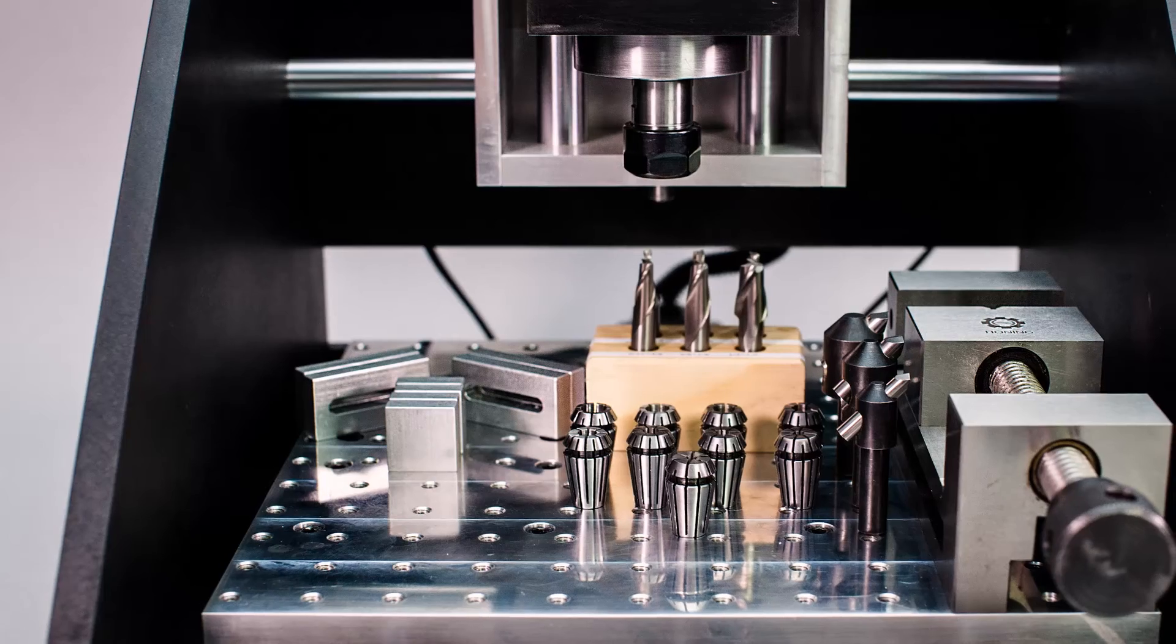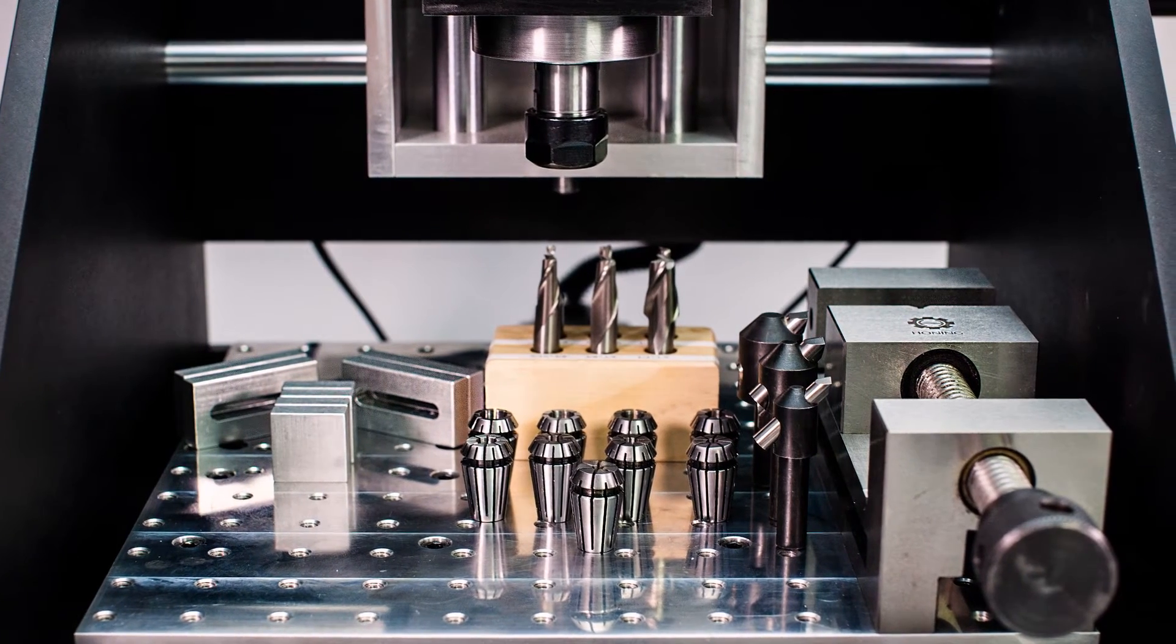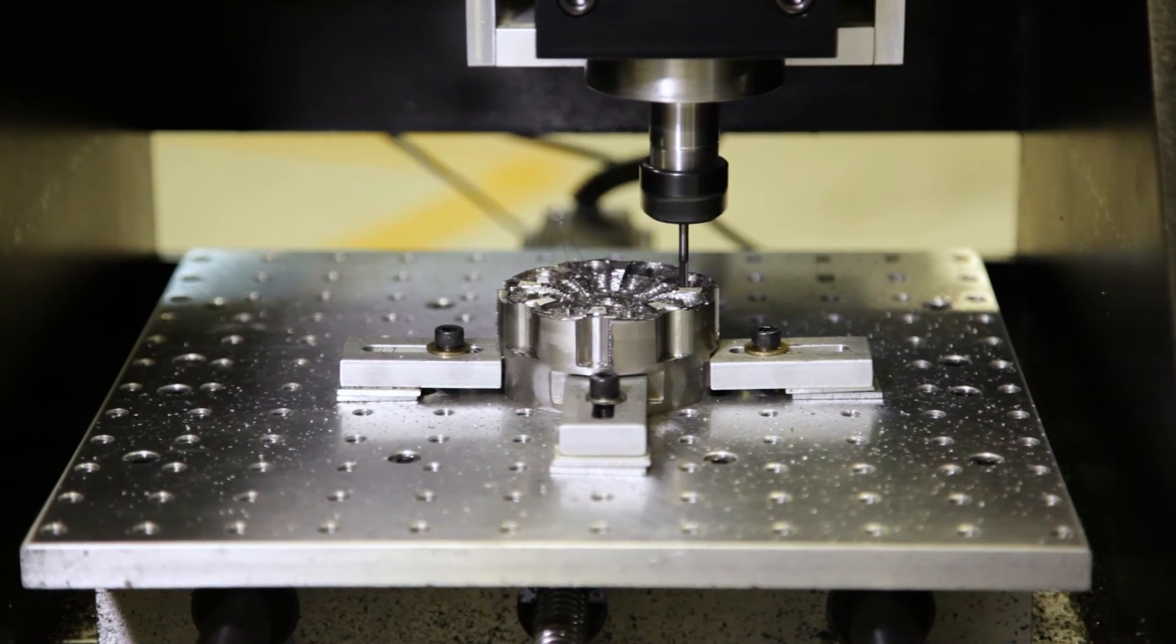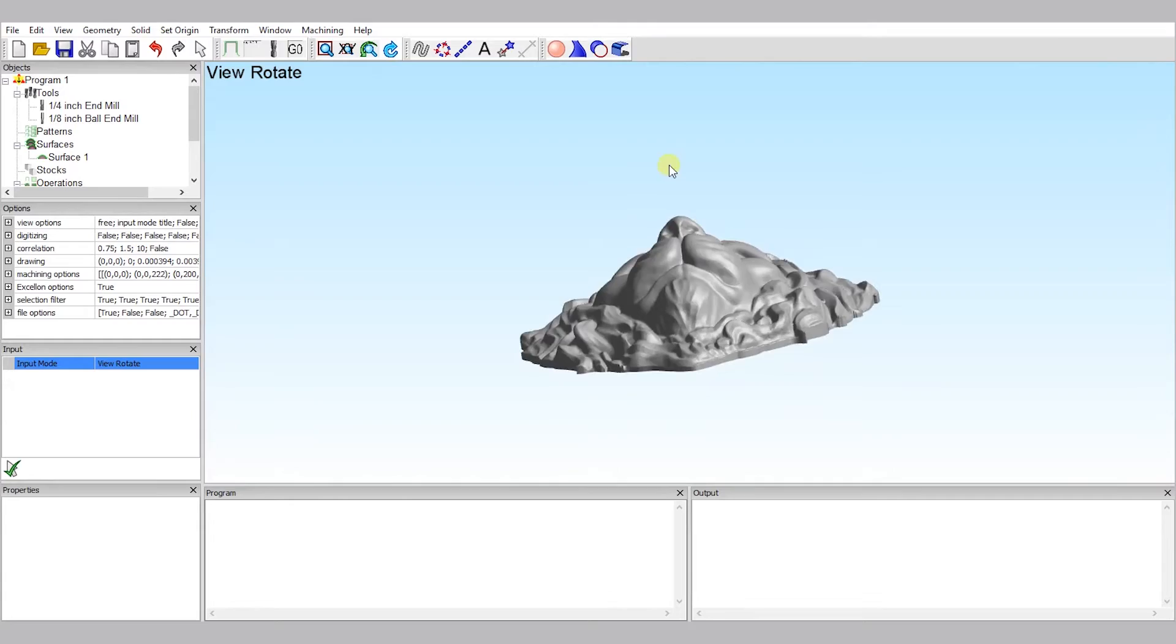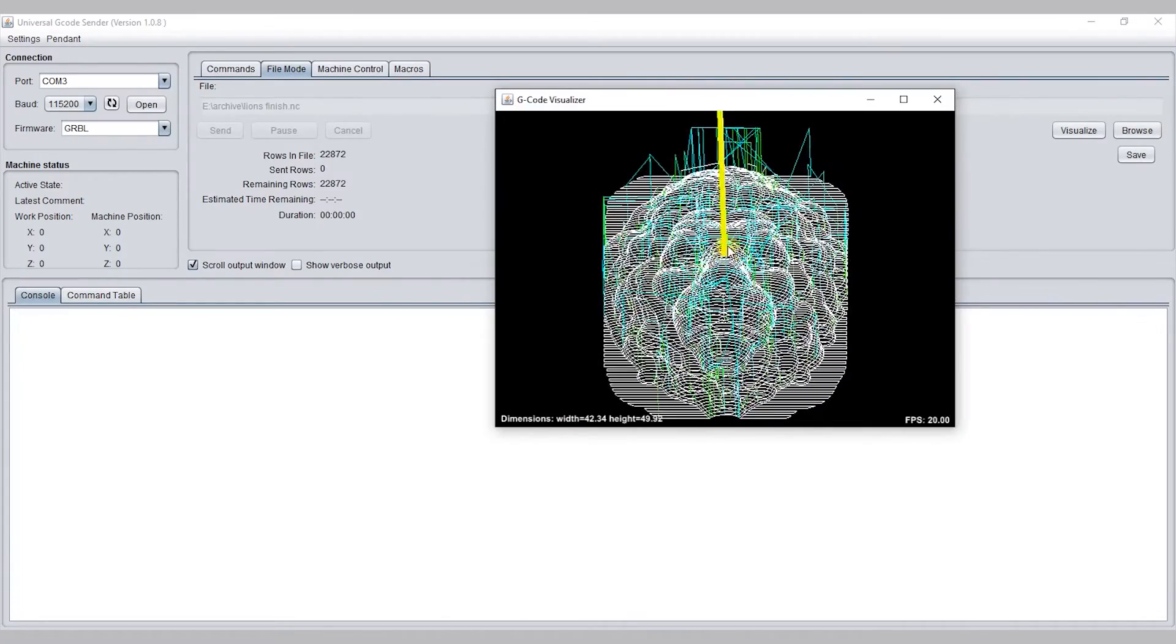Every SEMP desktop mill comes to you turnkey ready in one box with no additional assembly required. Simply plug the mill into any outlet. The software is beginner-friendly and compatible with any G-code program used worldwide.